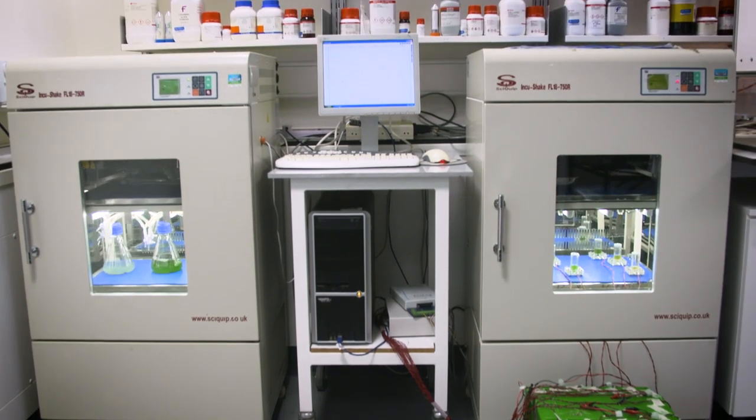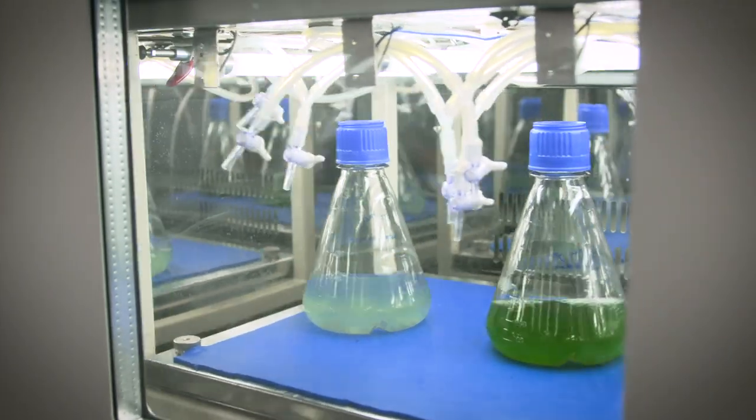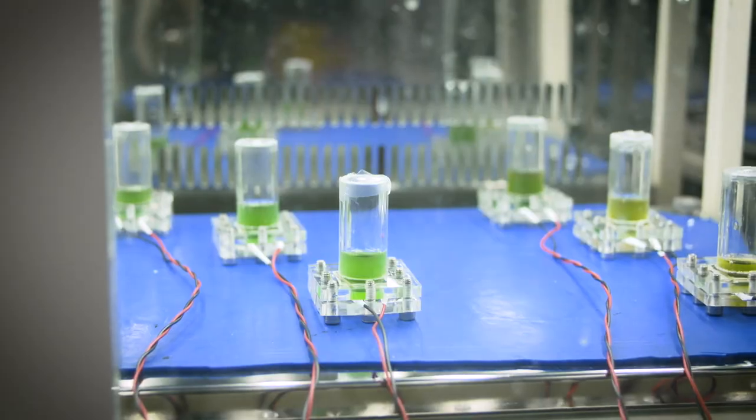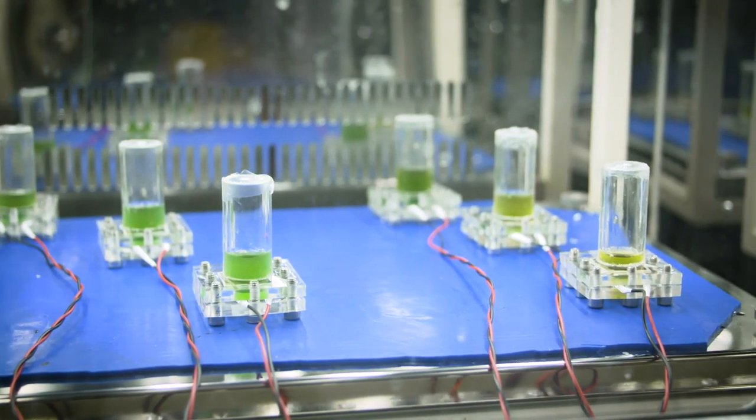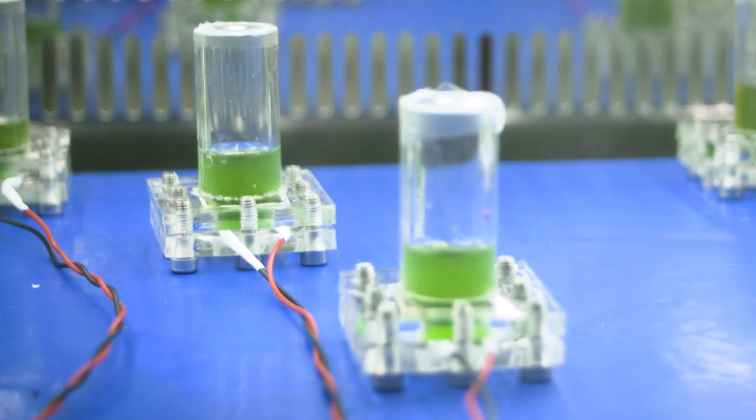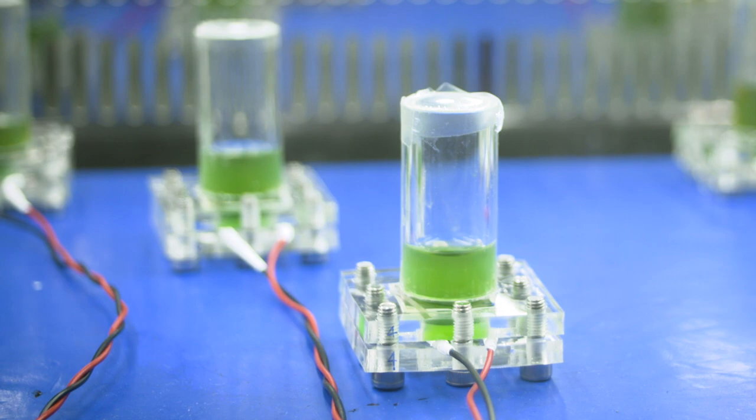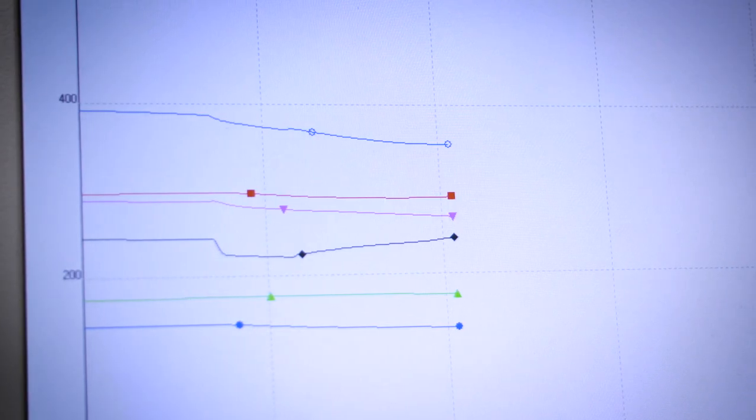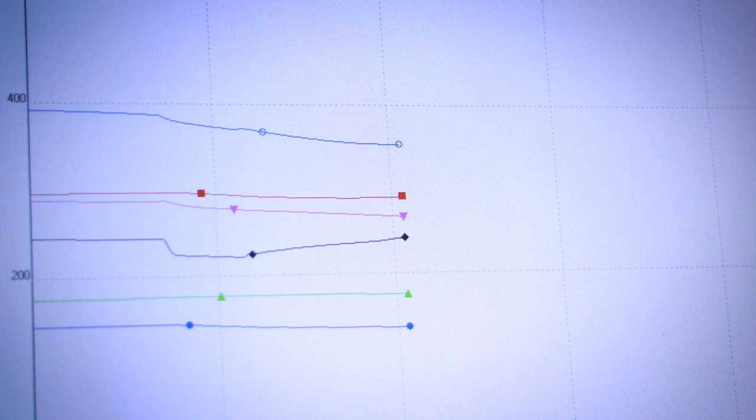The second type of microorganism is the oxygenic photosynthetic microorganism. We use them in a platform called a bio-photovoltaic device, which has an anode, separator, and cathode. During photosynthesis, there's oxidation of water, and this creates a flow of electrons to the cathode where we can generate current.